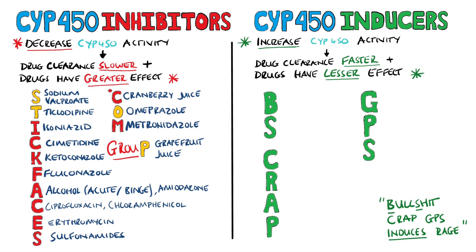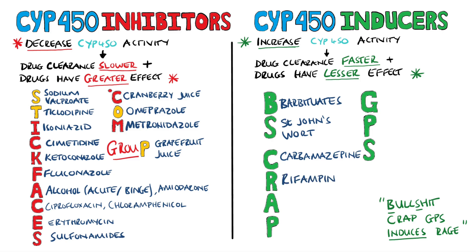B stands for the barbiturates, and the first S is for St. John's wort. C is for carbamazepine, which is an anti-epilepsy drug. R is for rifampin, also known as rifampicin, an antibiotic used against things like tuberculosis. A is once again for alcohol, but this time it's chronic use of alcohol rather than binge drinking or acute consumption.